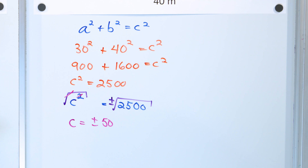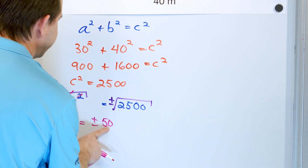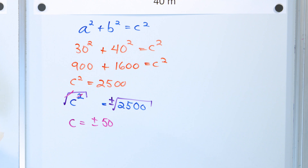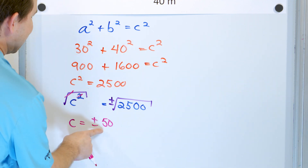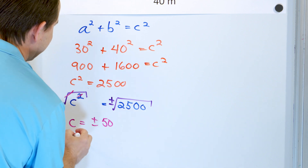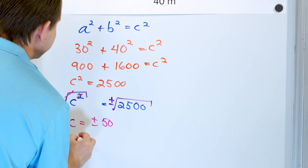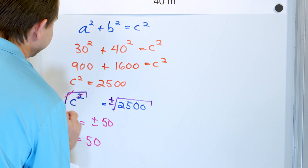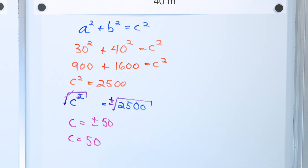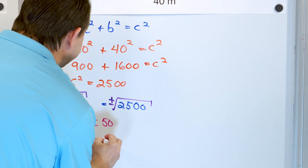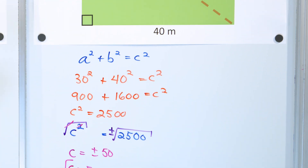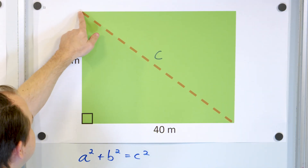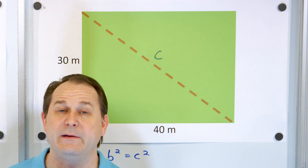If you're not sure, verify by going backwards: 50 × 50 = 2,500. So the answer is positive 50. Since all units were in meters, the fence length is 50 meters. The length of the fence from corner to corner is exactly 50 meters long.